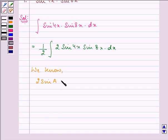is equal to cos(A - B) minus cos(A + B). Right, on using this formula,